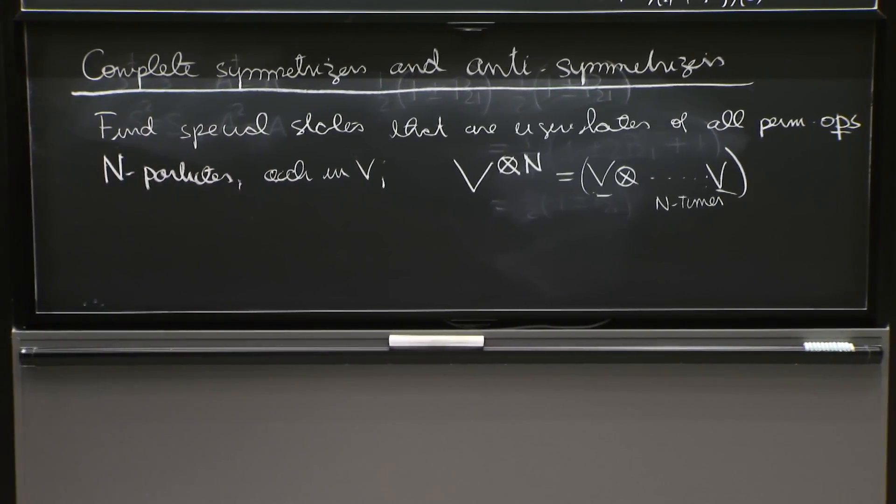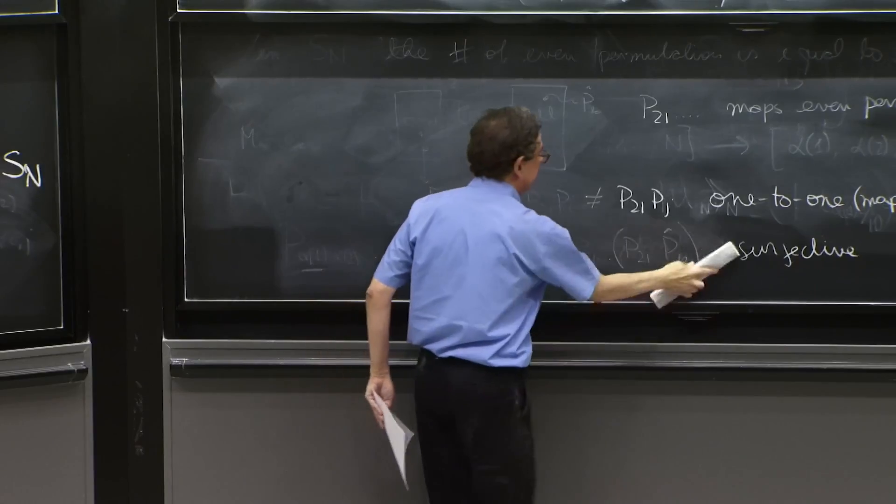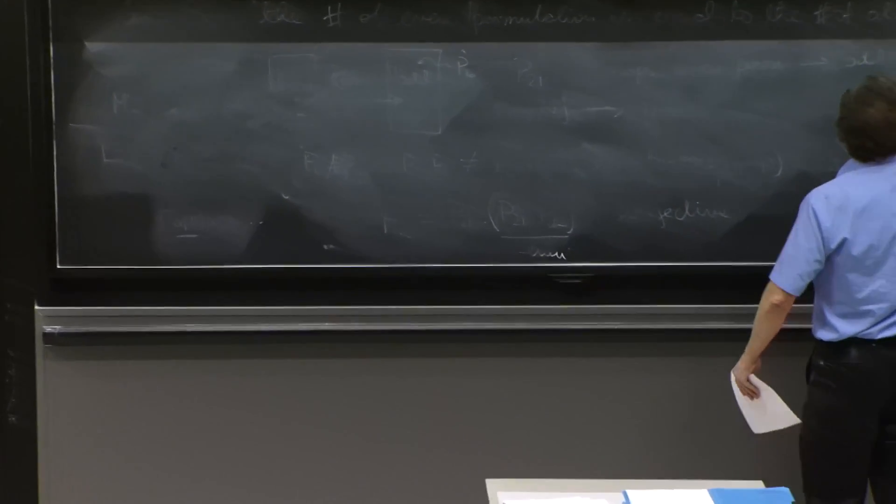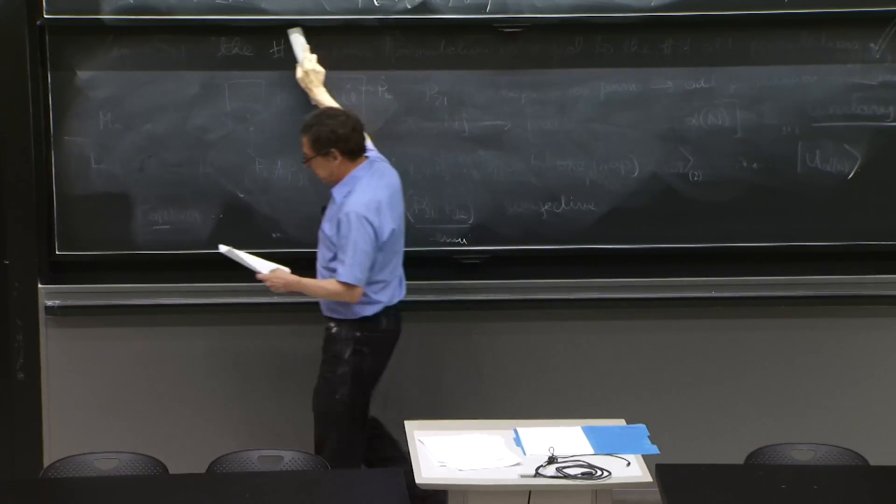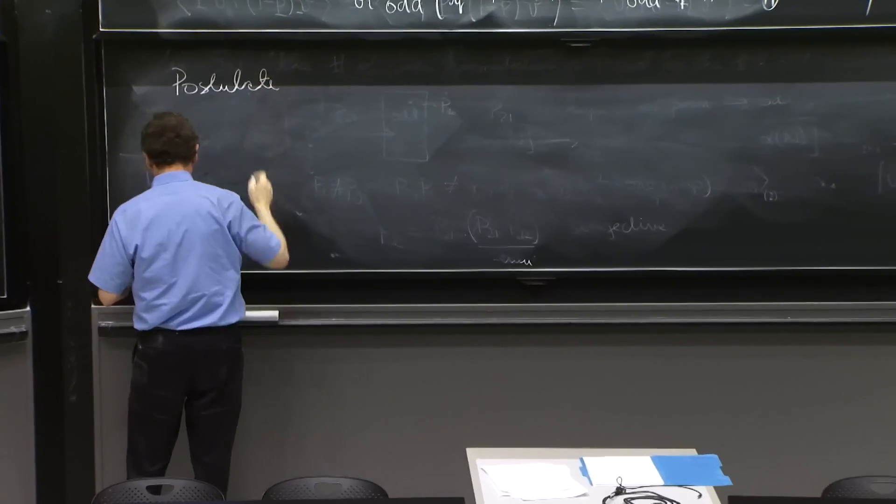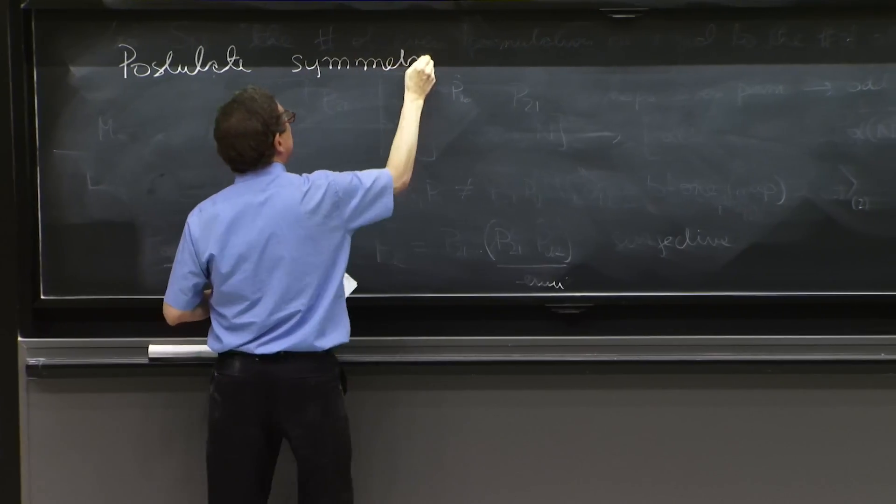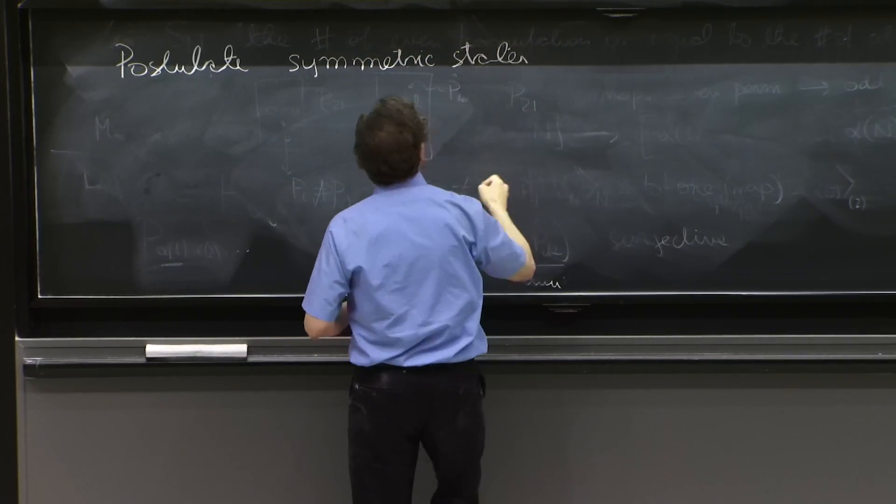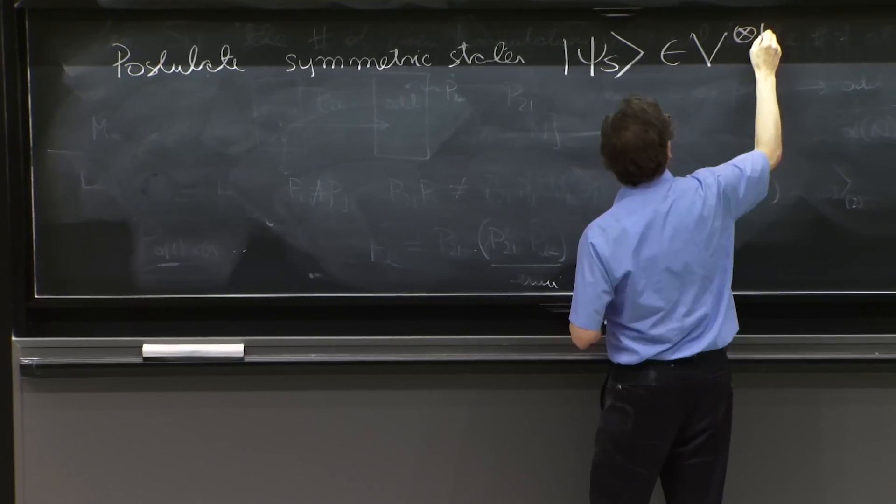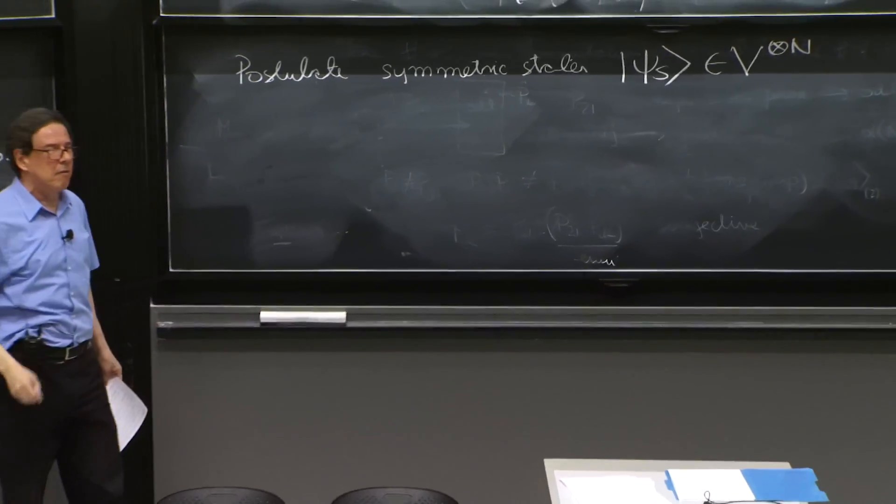So here is a claim that we're going to postulate the existence of symmetric states. Those are the states that eventually we'll see are the ones physics wants. So postulate the existence of symmetric states psi_s in V tensor n. In the whole big space, there's symmetric states. And what is the characteristic of a symmetric state?